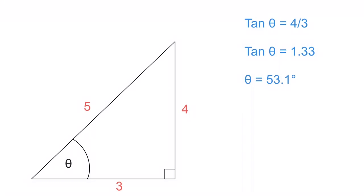So there you go. We have determined using any of these three sides — using either sine, which is opposite over hypotenuse; cosine, which is adjacent over hypotenuse; or tangent, which is opposite over adjacent — that the angle is 53.1 degrees. Now in the next video, we're going to determine what to do when you've got just an angle and a side. Hopefully this was helpful. If you have any questions, please leave a comment in the comment section and we'll see you in the next one.